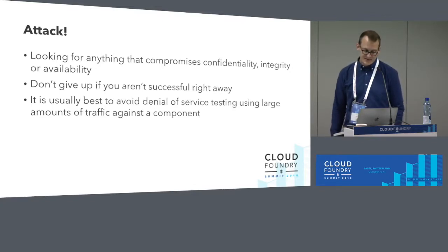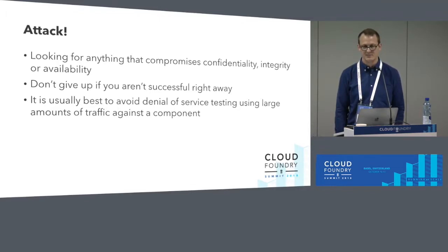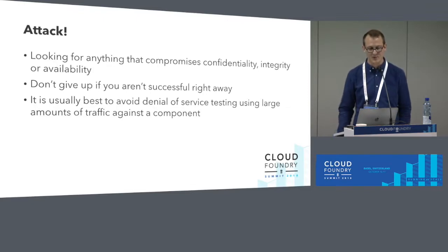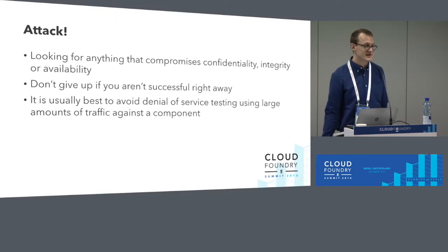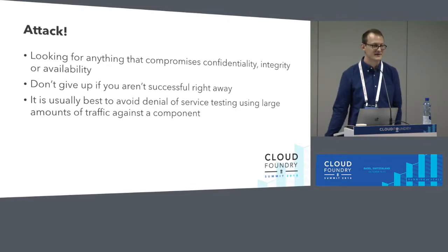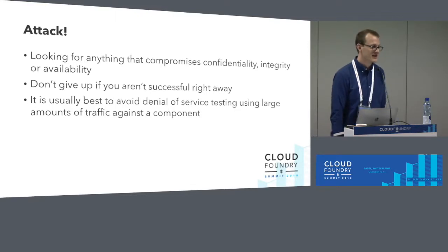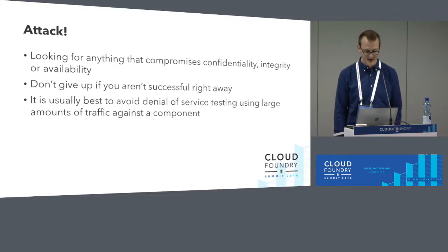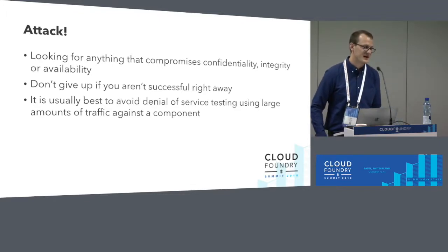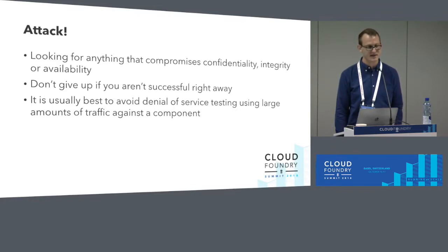Then the last thing is to perform the test. What you're looking for is any change in behavior or response that compromises confidentiality — information you shouldn't see based on who you are. Integrity — if you can modify something you shouldn't be able to modify. Or availability — if you find a way to send three attacks and it falls over, that's certainly problematic. Some of these can be really subtle, like if an attack sends back an error message that includes details about the environment. So look out for subtle changes and do a bit more research.